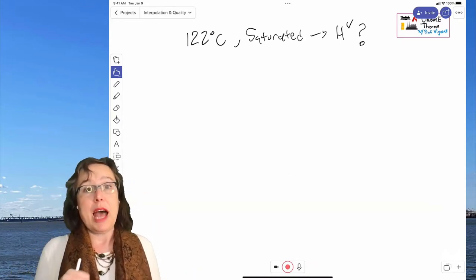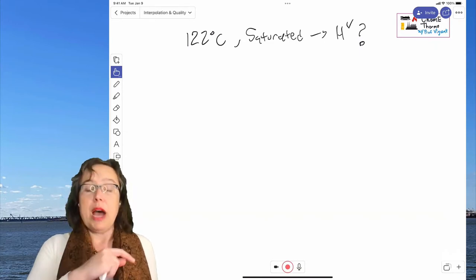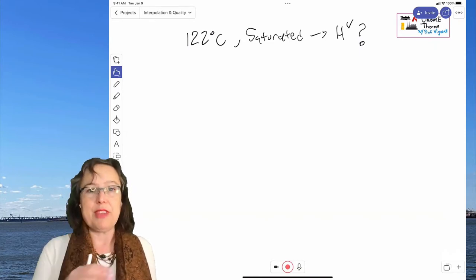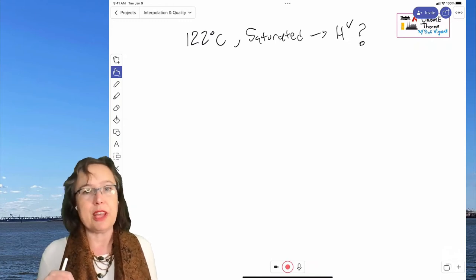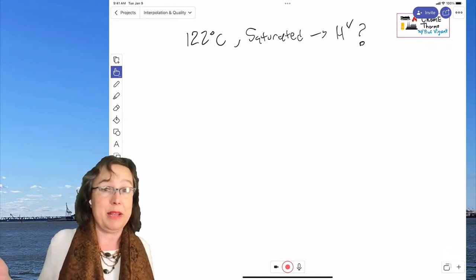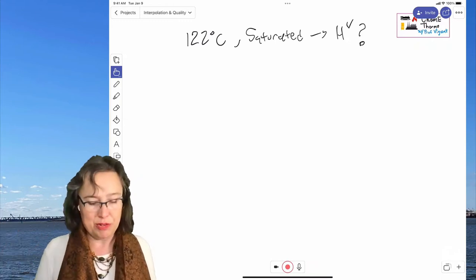So I'm going to make sure we know how to do this. So our example is if we have saturated steam at 122 Celsius, what's its enthalpy? And we're going to have 100% paper here.